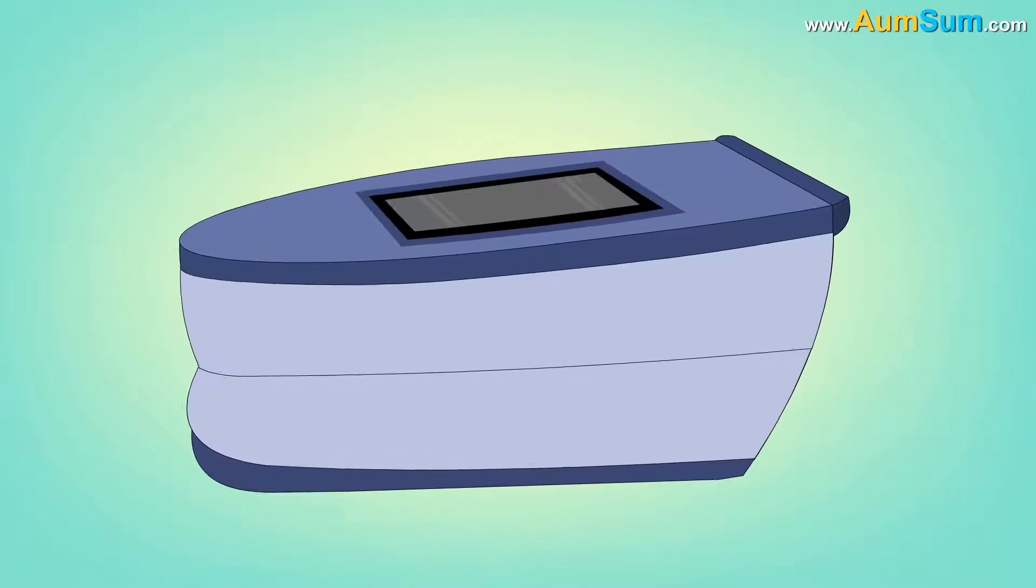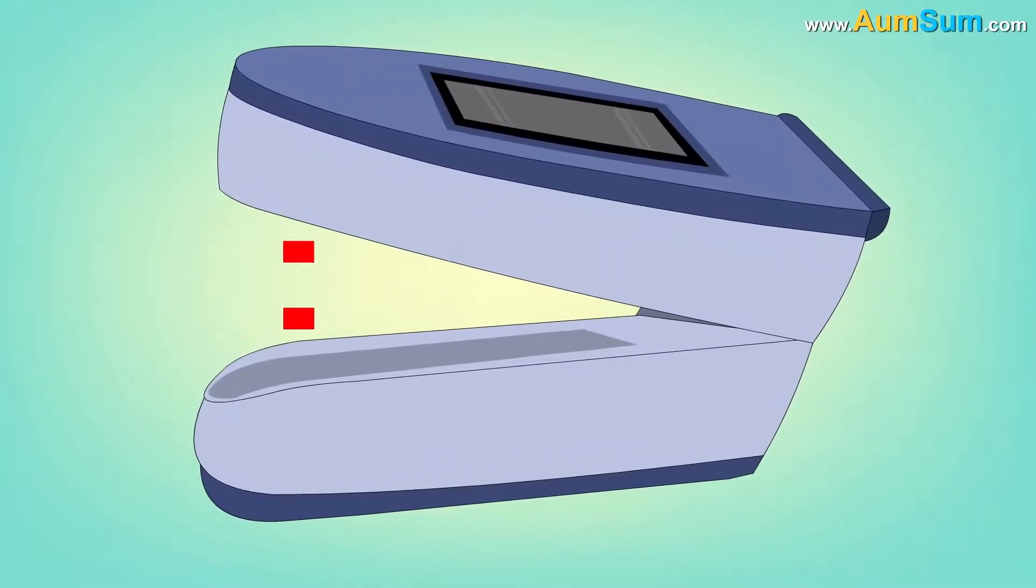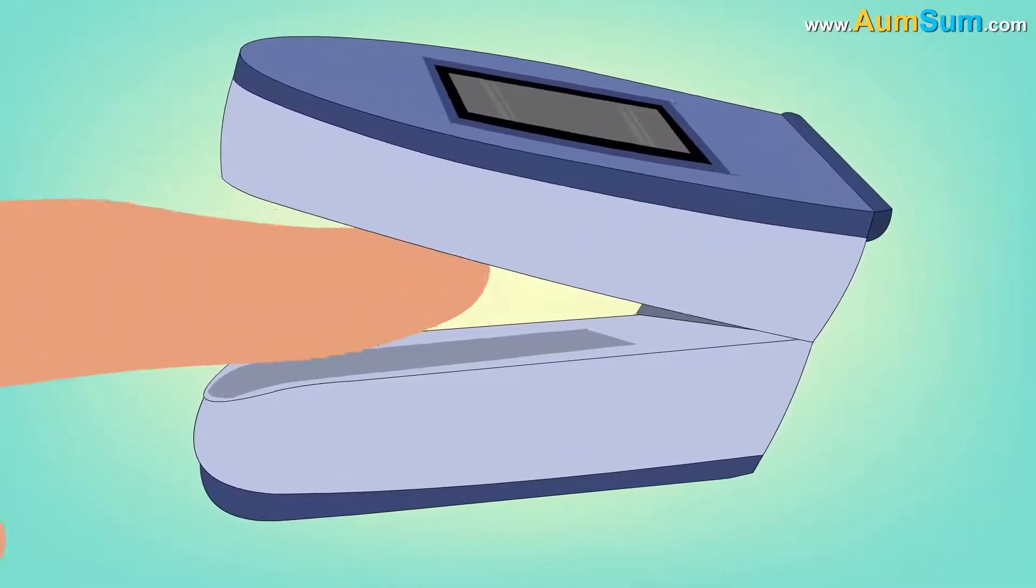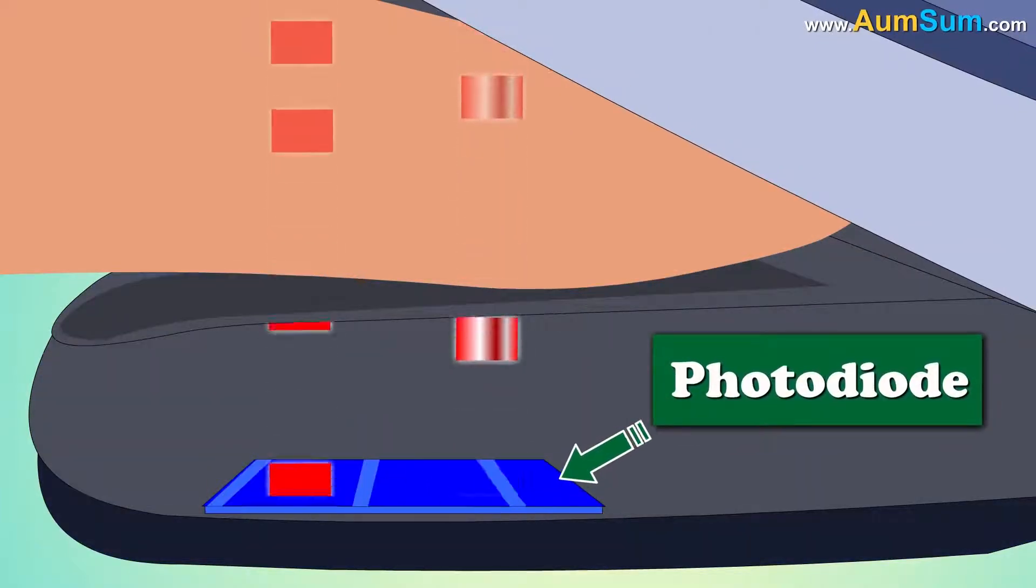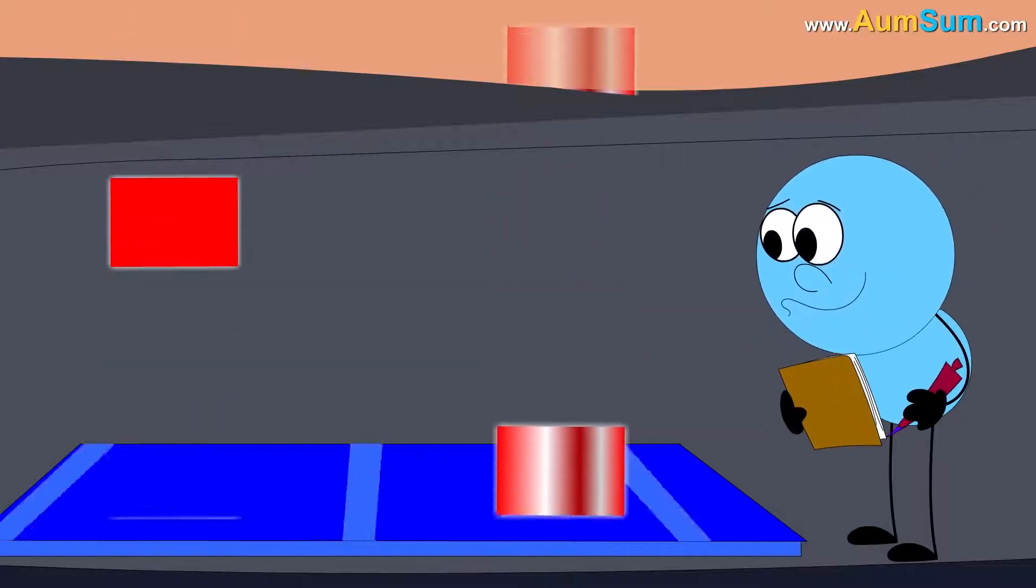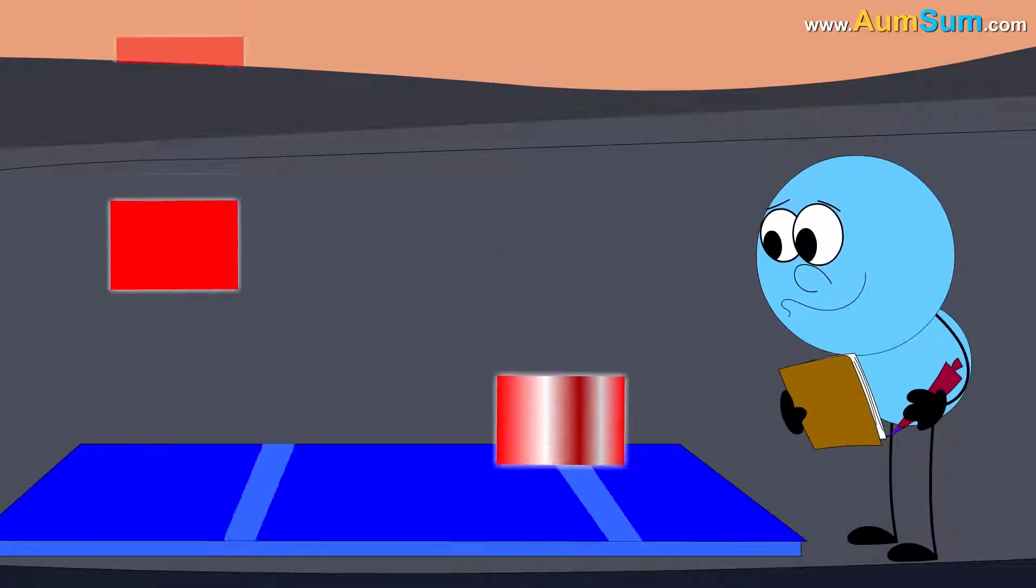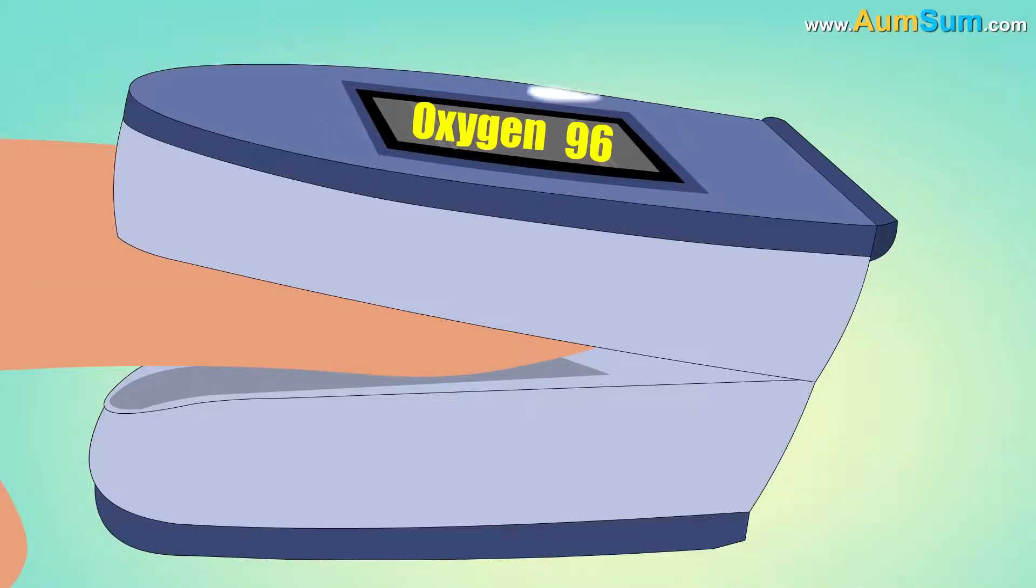Oxygenated hemoglobin absorbs greater amounts of infrared light and lower amounts of red light as compared to deoxygenated hemoglobin. Now, a pulse oximeter has LEDs which emit red as well as infrared light. These lights pass through our finger and are detected by a photodiode on the opposite end. Finally, by measuring changes in the light absorption, a pulse oximeter is able to give us the oxygen level in our blood.